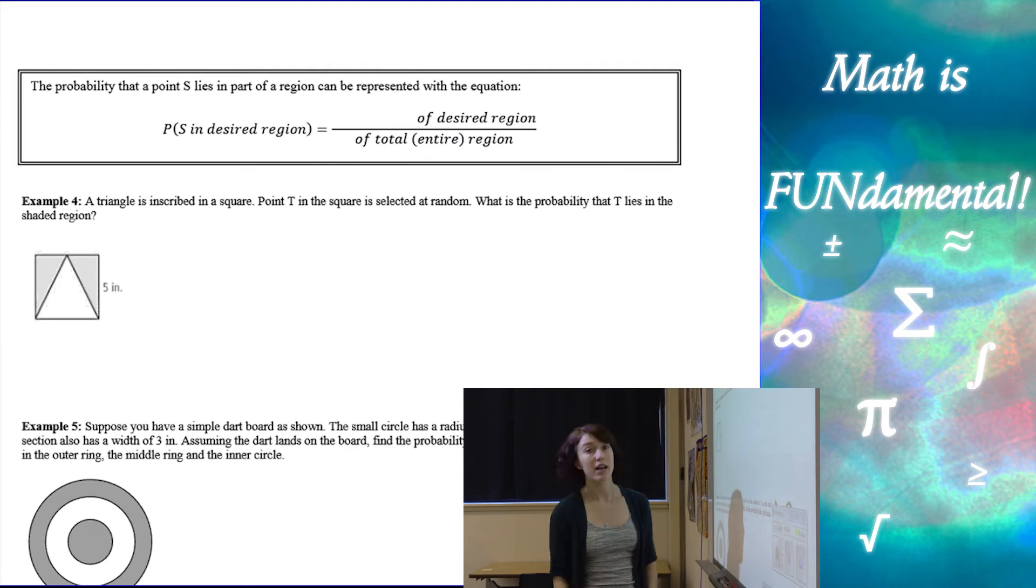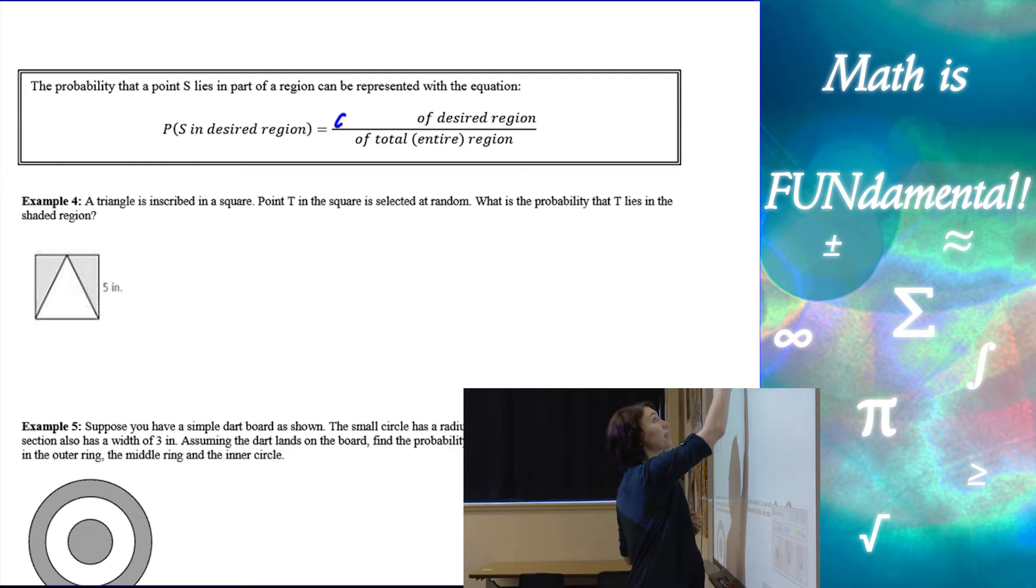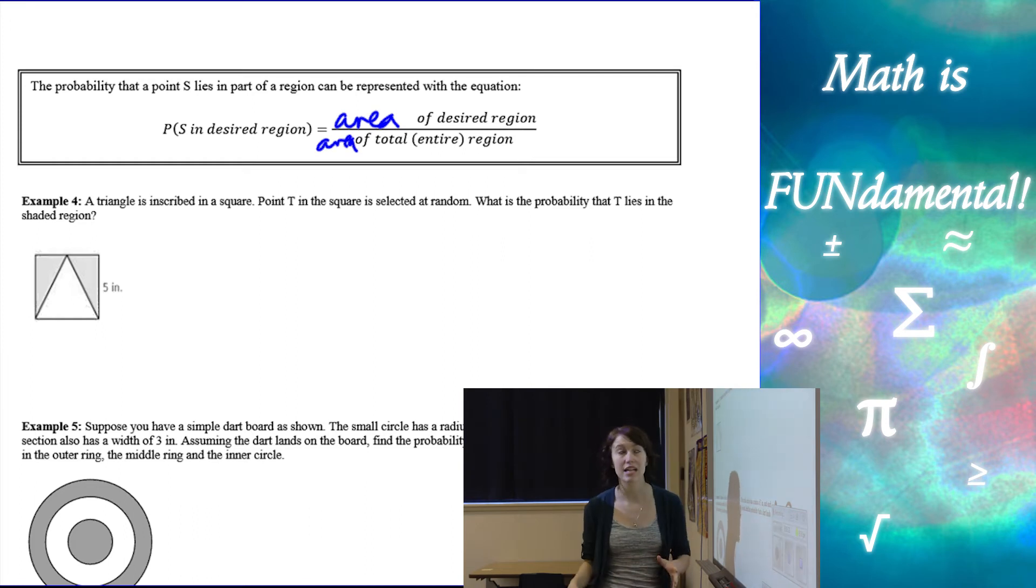Alright, now let's look at what happens when we talk about area. So those were length probabilities. Now let's talk about area. So the probability that a point S lies in a region, so in the area of a region, is going to be represented by doing the area of the desired region over the area of the total or the entire region.